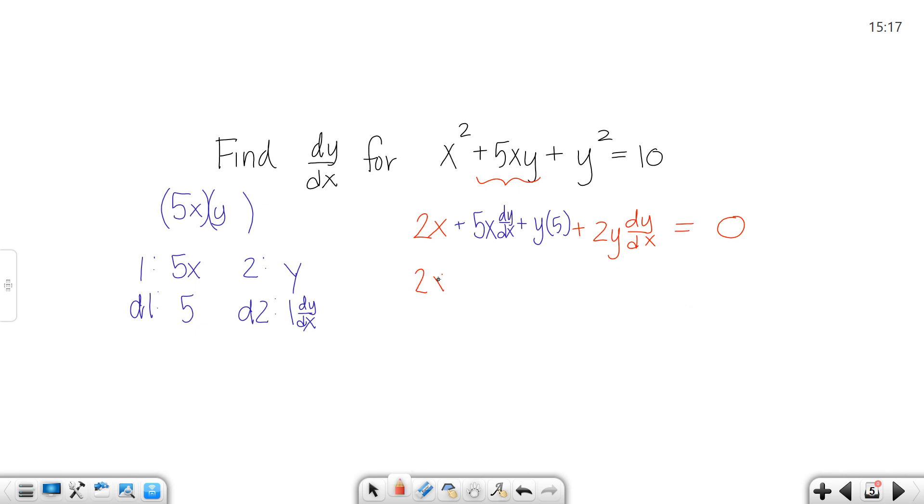So we get 2x plus 5x dy/dx plus 5y plus 2y dy/dx equals 0. Let's keep our dy/dx's on this side and move everything else over. So 5x dy/dx plus 2y dy/dx equals negative 2x minus 5y when these move over.